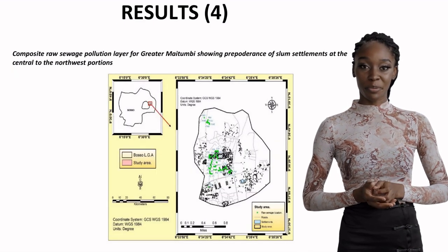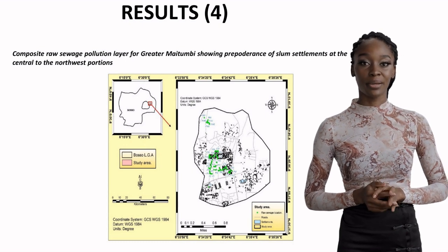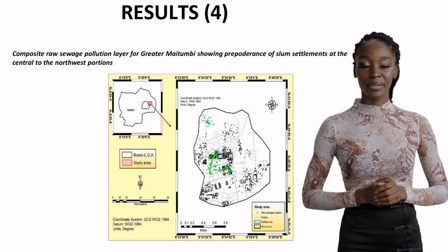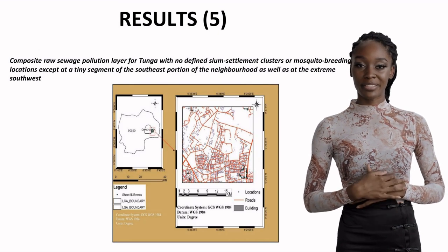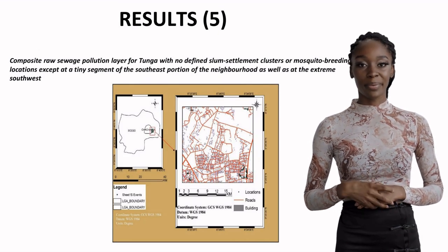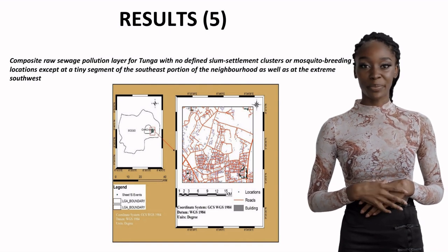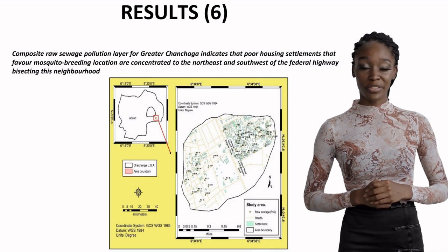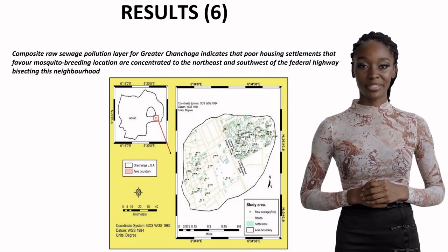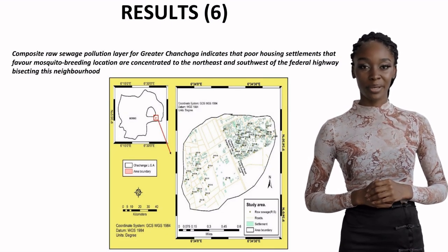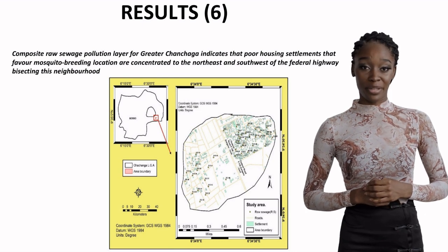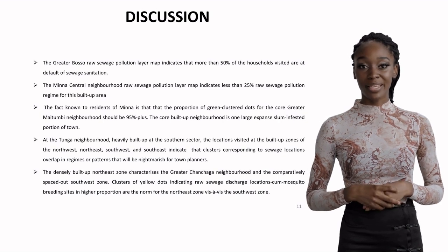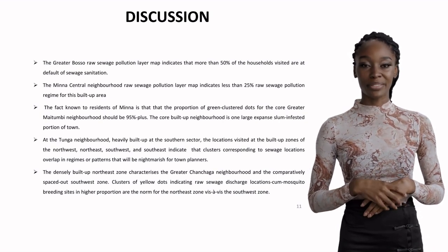Greater Maitumbi shows an alarming prevalence of slum settlements, particularly in the central and northwestern portions of this sector. Tunga presents a more positive picture, with limited slum settlements except for small segments in the southeast and extreme southwest portions. Greater Chanchaga's analysis shows poor housing settlements concentrated along the federal highway, particularly in the northeast and southwest sections.